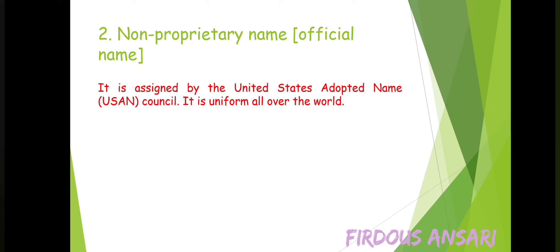There are many older drugs that still have more than one non-proprietary name. For example, Meperidine and Pethidine — both are one and the same, and both are the non-proprietary name, or you can say the official name. Similarly, you might have heard about Lidocaine and Lignocaine — both are one and the same.